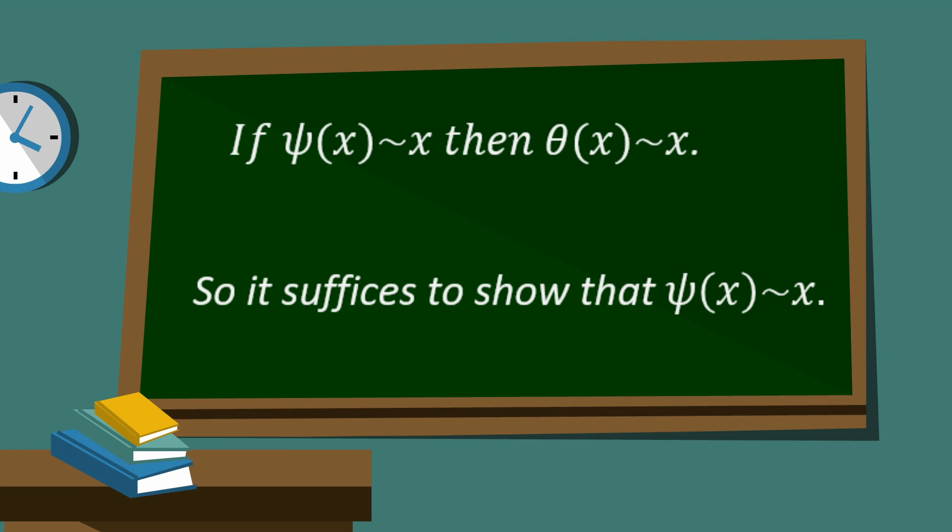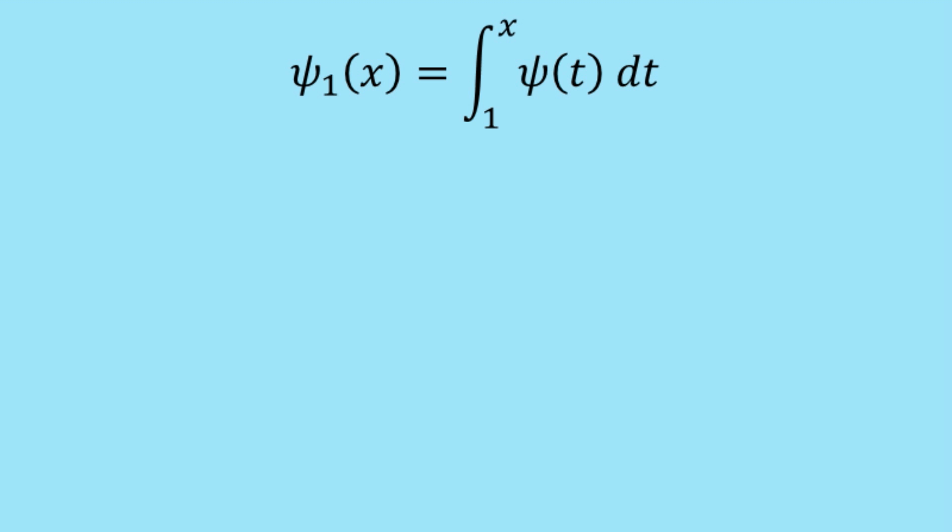So how are we going to do that? Well, we now create the third function, psi_1(x). Now psi_1(x) is what's called a smoothing function. If you graphed psi of x, you'd see that it's a step function. It jumps every time you get to a prime power. So one technique in number theory is to use smoothing functions, which smooth that out. And one way to do that is to use integration. So we let psi_1(x) equal the integral from 1 to x of psi(t) dt. And if you plotted that, you'd see that it smooths out the psi function.